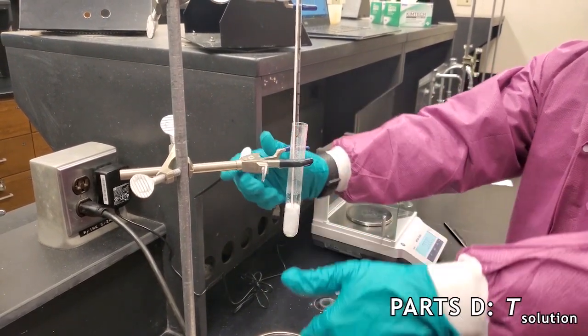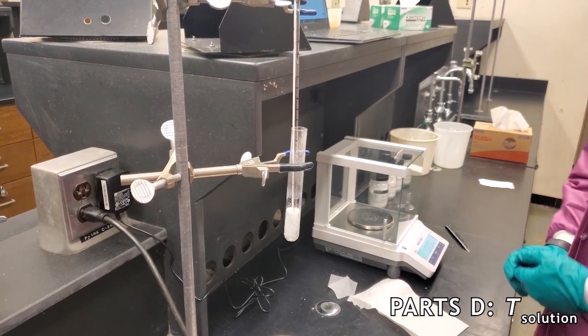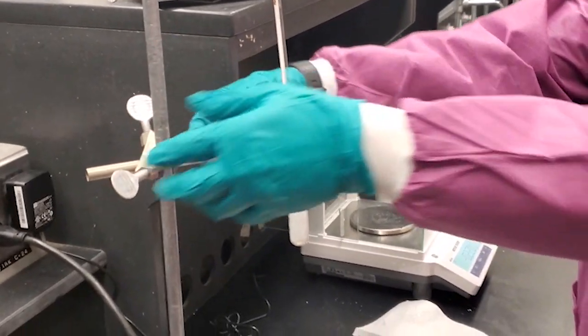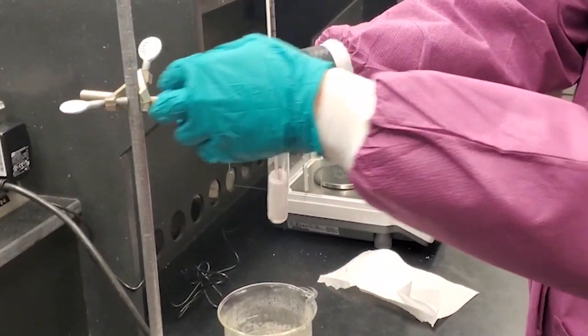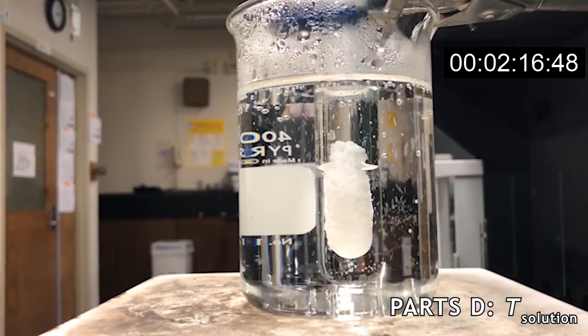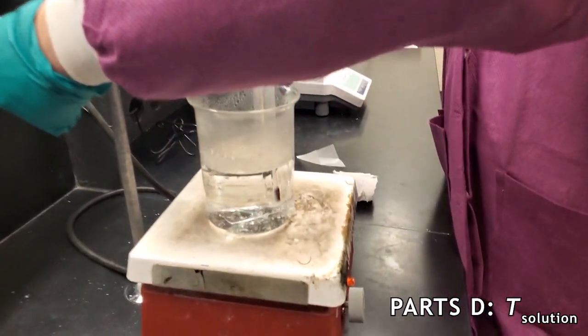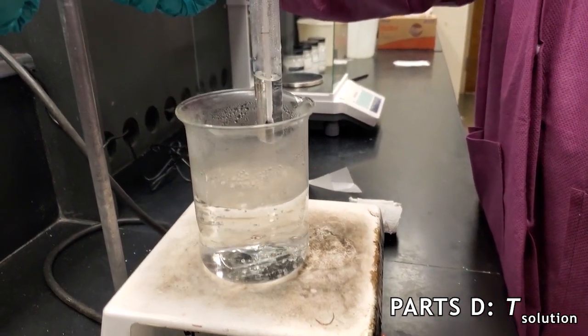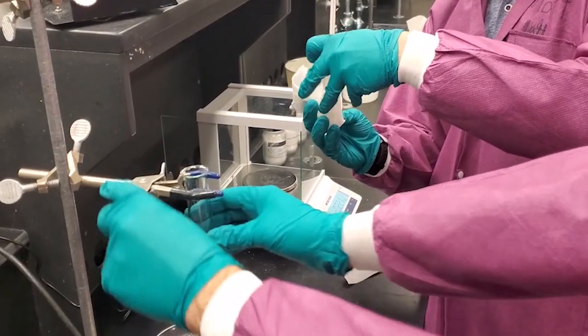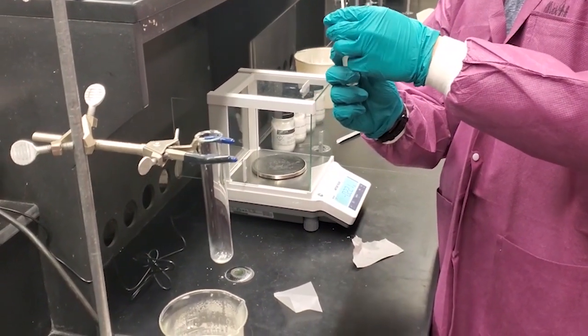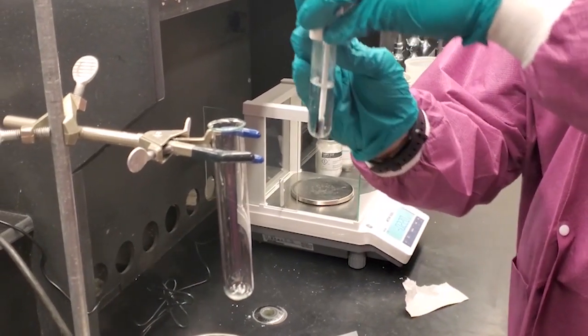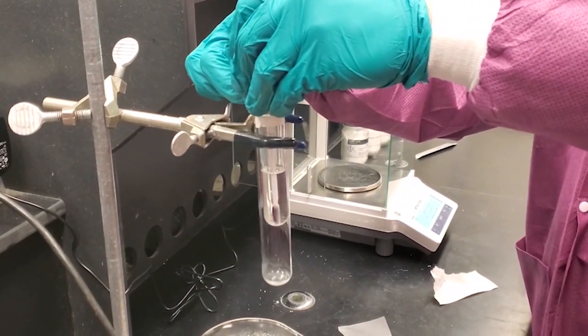We add our unknown fatty acid and we will reheat it to melt it. Once this is done, we will remove it from the water and rewrap the inner tube with a paper towel. We place it carefully in the larger test tube and take measurements again every 30 seconds.